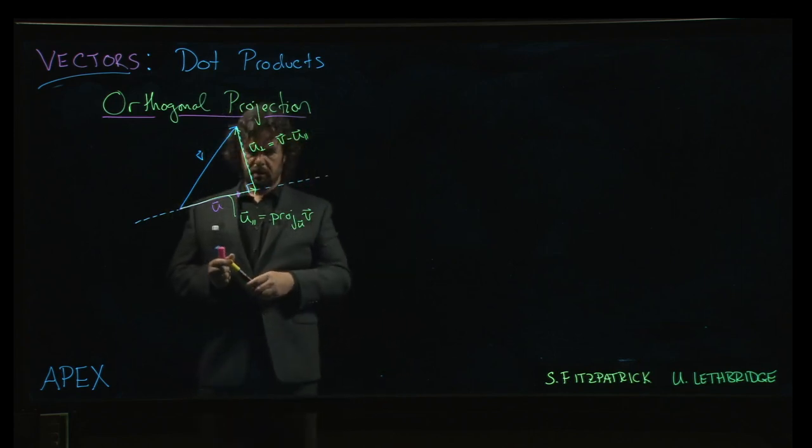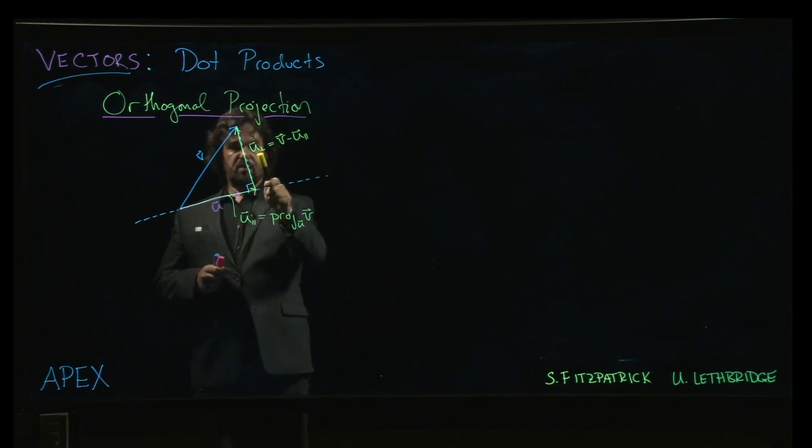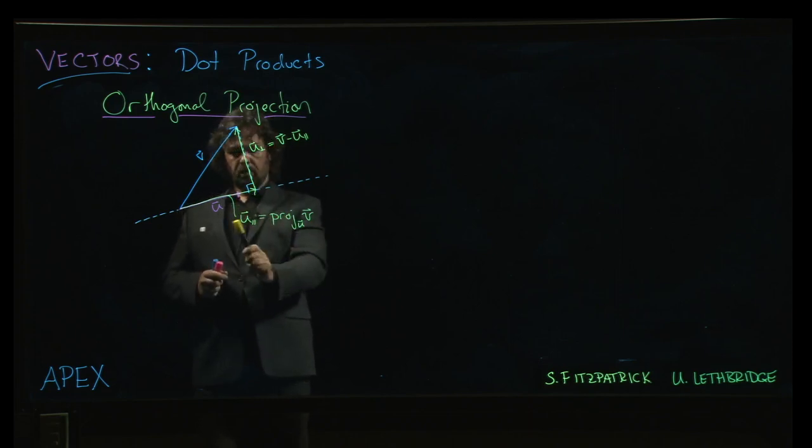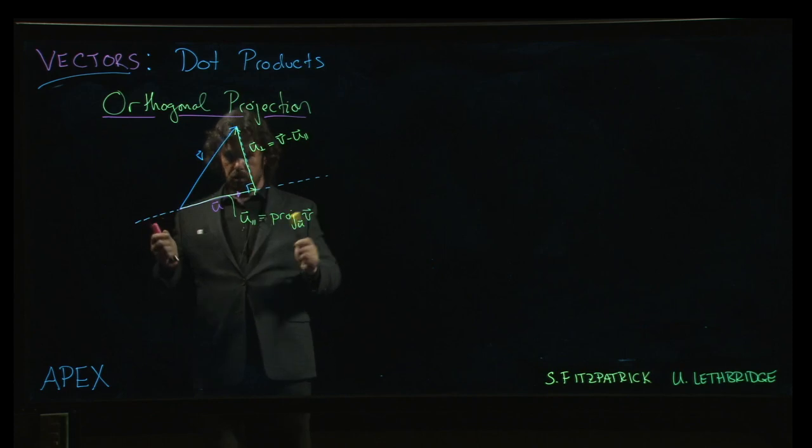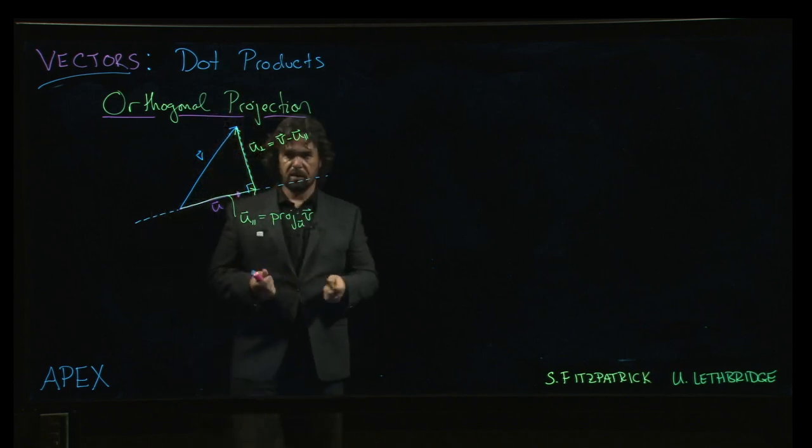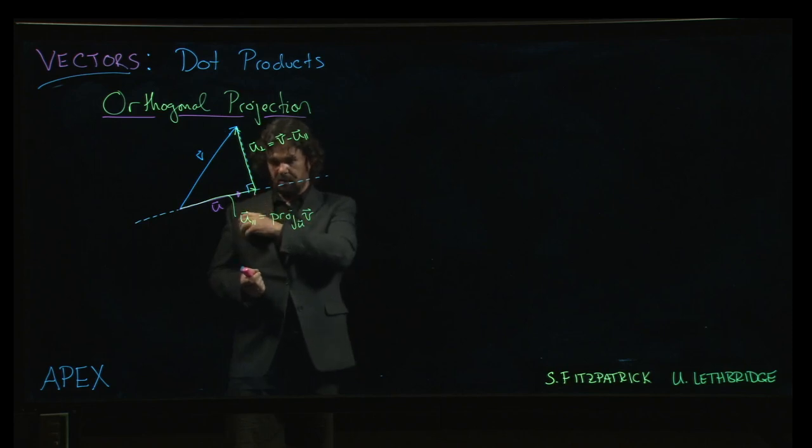Now, as I've drawn it, this vector here is supposed to be orthogonal to u. We're supposed to have this right angle. This vector is supposed to be parallel to u. And so we want to work things out to make sure that this actually happens. So let's think about it.